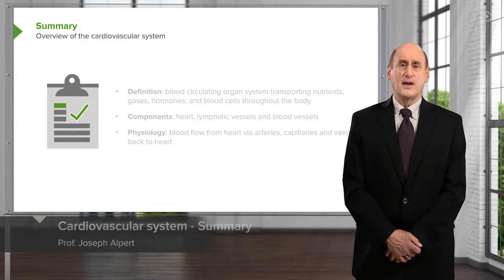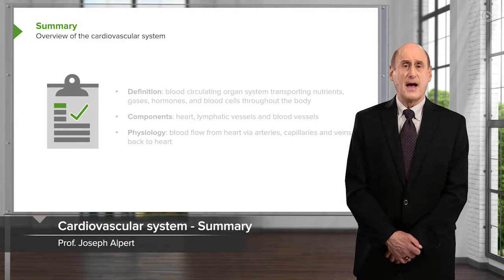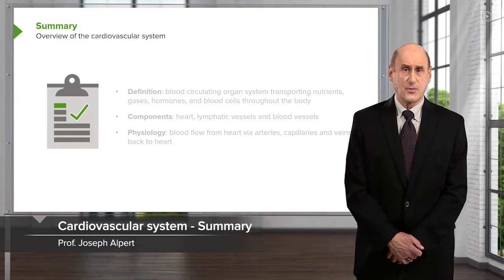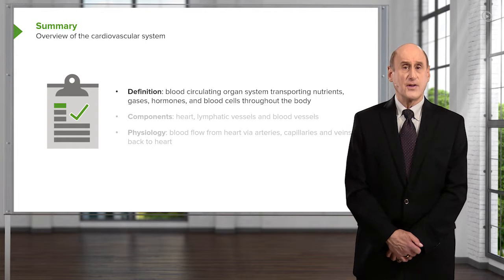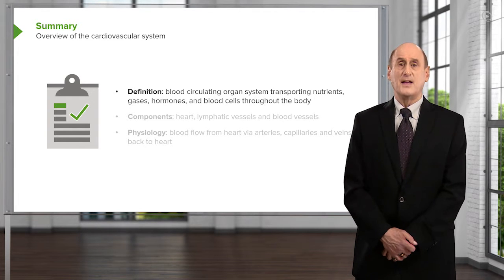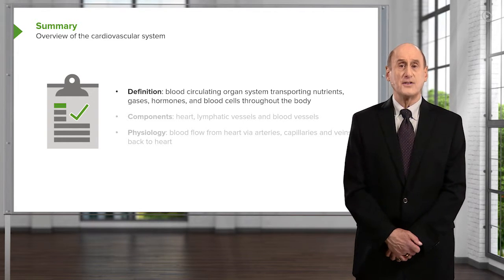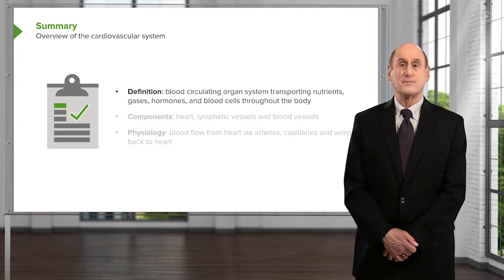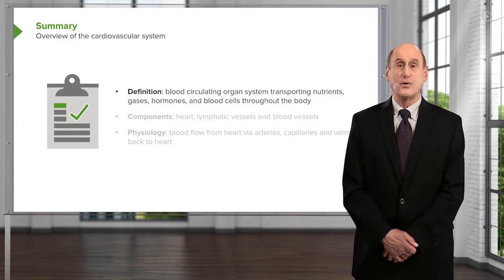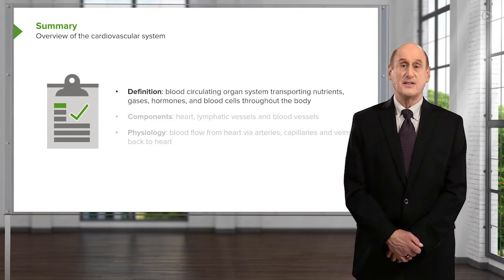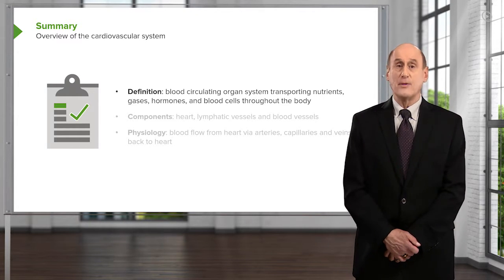So, in summary then, what we've talked about so far in this introductory talk is the definition of the cardiovascular system. It is the blood-circulating organ system that transports nutrients, gases, hormones, and blood cells throughout the body.